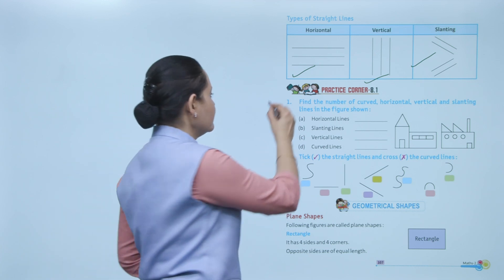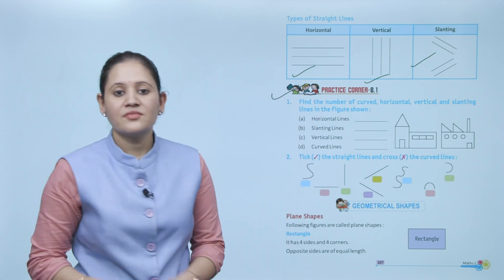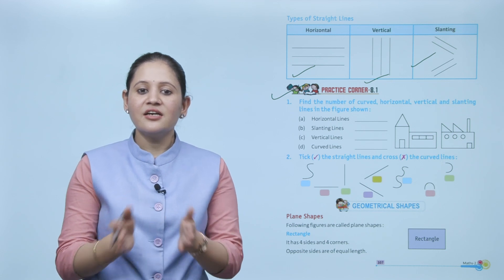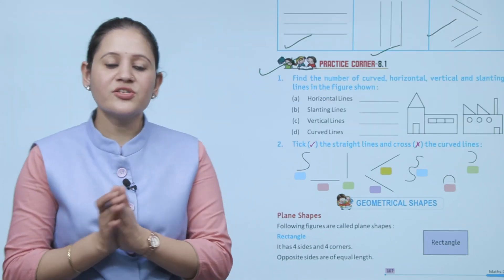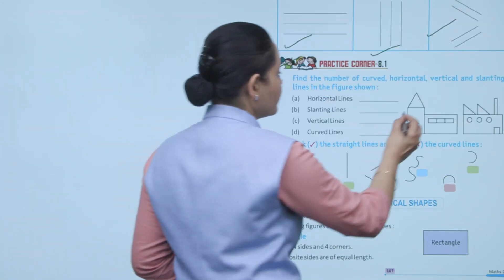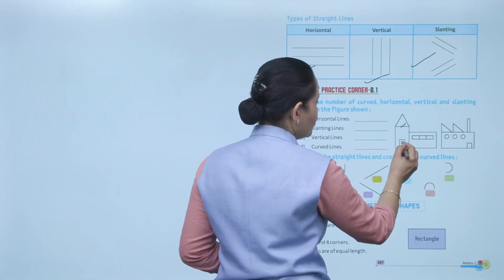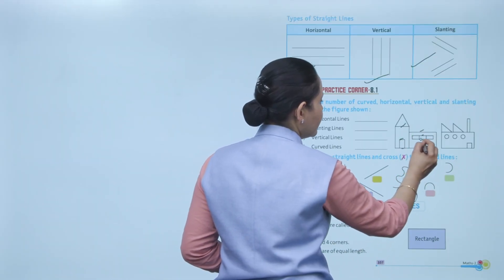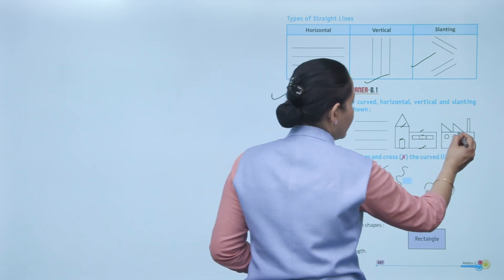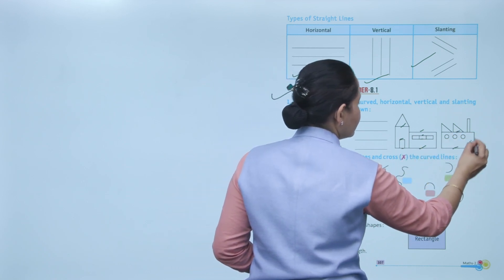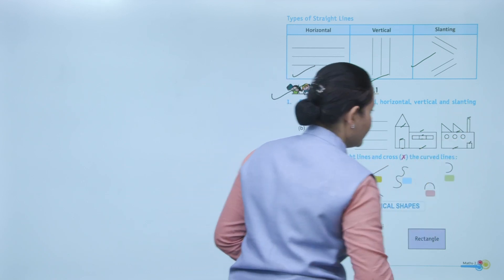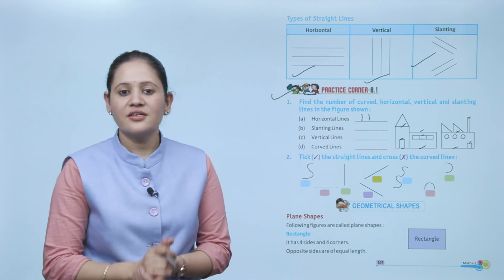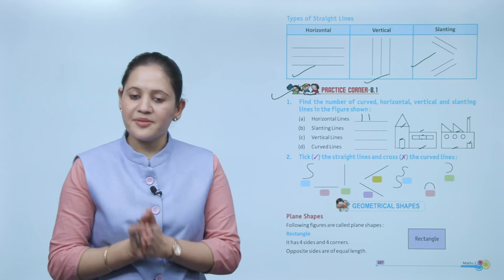Practice corner 8.1: find the number of curved, horizontal, vertical, and slanting lines in the figure shown. For horizontal lines, you have to count: one, two, three... up to eleven. So total eleven horizontal lines. Next is geometrical shapes.